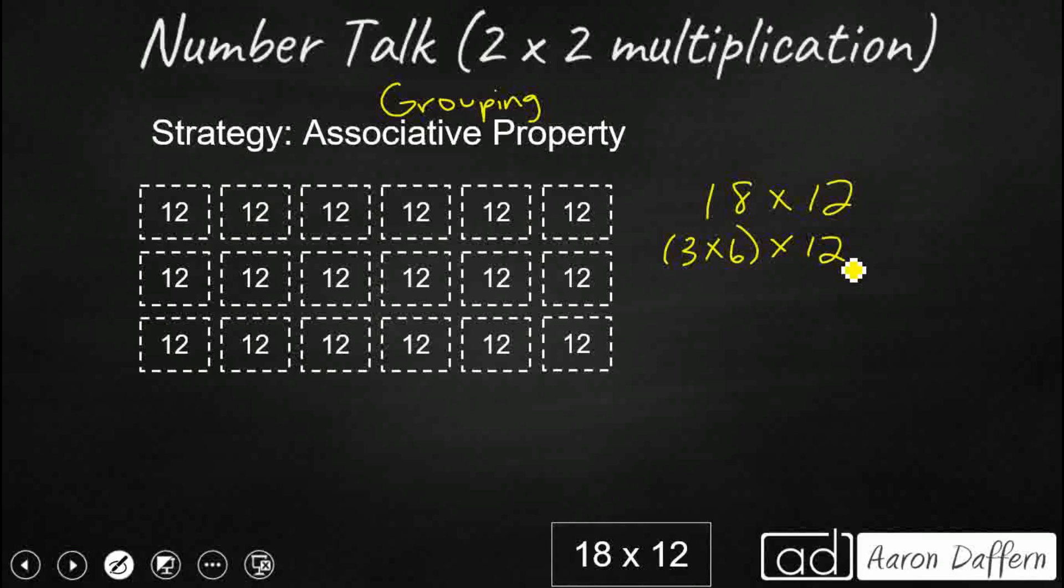So what the grouping property or the associative property lets me do is simply shift the groups. I'm going to take these parentheses and shift them over one. So you notice I've got the same three factors. 3 times 6 times 12. I'm just going to do my 6 times 12 first. So I want to do 6 groups of 12.